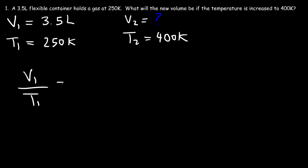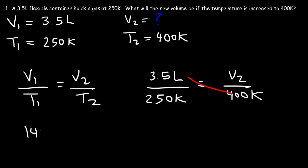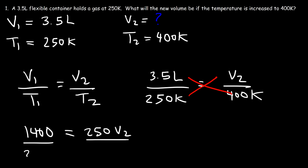All we have to do is plug the information into the equation and solve for the missing variable. V1 is 3.5 liters and T1 is 250 Kelvin, V2 is what we're looking for, and T2 is 400 Kelvin. Cross-multiplying: 3.5 times 400 equals 1400, and that equals 250 times V2. Dividing both sides by 250 gives V2 = 1400 ÷ 250 = 5.6 liters.